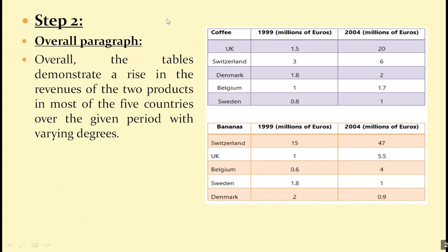Step two: write an overall paragraph. In the overall paragraph you need to look at the numbers and find the similarities and differences. What you can notice is that most of the numbers are increasing — all of them when it comes to coffee, most of them when it comes to bananas. However, in Sweden and Denmark for bananas, 1.8 became 1 and 2 became 0.9, so those declined. You also want to note that the level of increase is not the same: some countries increased dramatically, for example from 1.5 to 20 and from 15 to 47, while others increased only slightly, such as from 1.8 to 2.